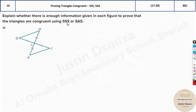I'm sure you know what SSS and SAS mean. SSS means all three sides are equal or congruent to each other. Whereas SAS means there is a side, then an included angle — that is the angle in between — and another side. So SAS.